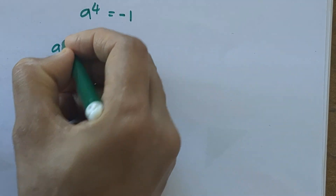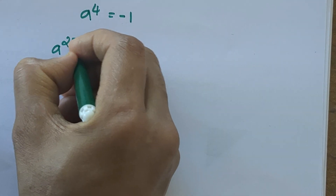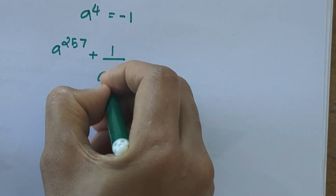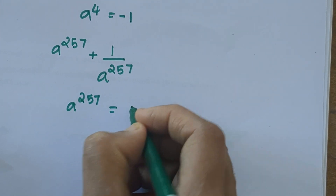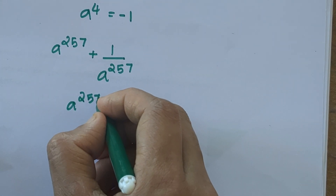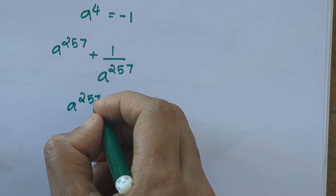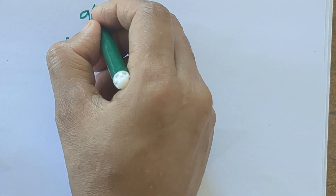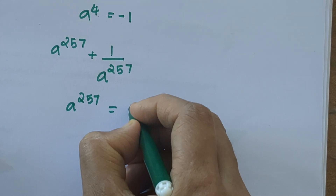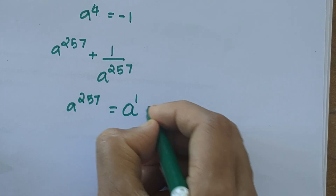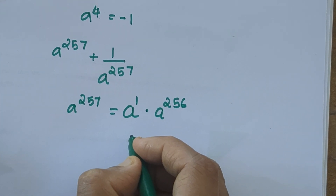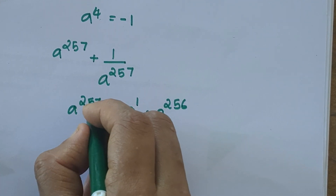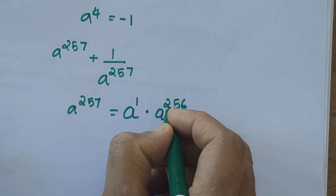Now we have to find a raised to 257 plus 1 by a raised to 257. We can write a raised to 257 as a raised to 1 times a raised to 256, since a^m × a^n = a^(m+n). So we split 257 as 1 plus 256.